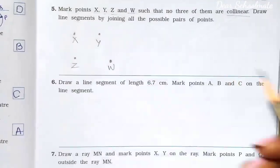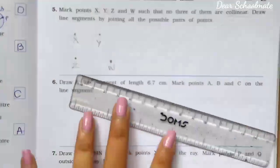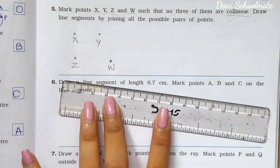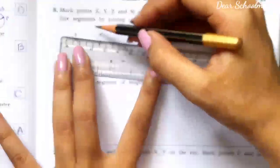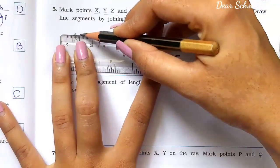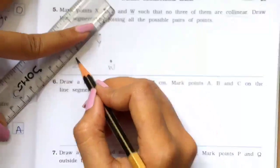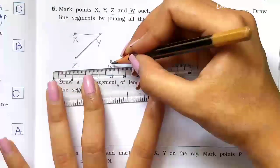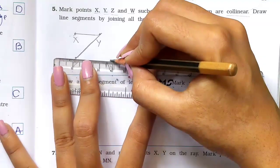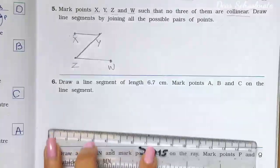We will join them here: X, Y, then Y, Z, and then Z, W. We will join them in this way.